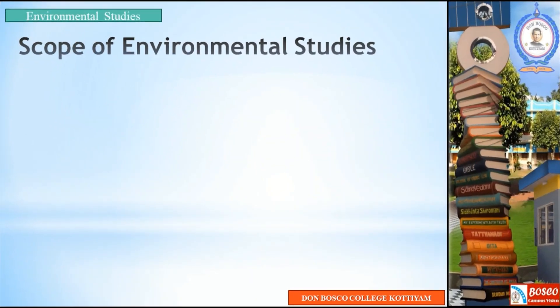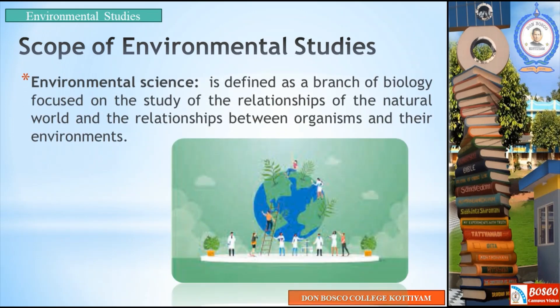The scope of environmental studies can be well explained with the help of three different terms. The first term is environmental science, defined as a branch of biology focused on the study of the relationship of the natural world — the relationships between living organisms, non-living organisms, and their environment.